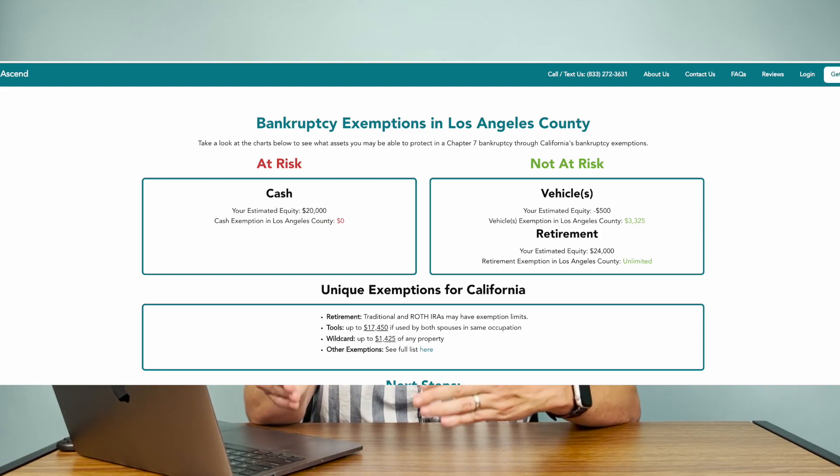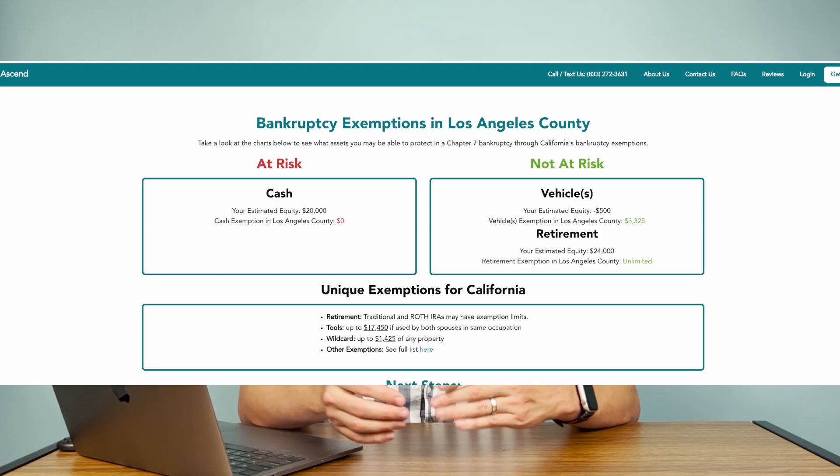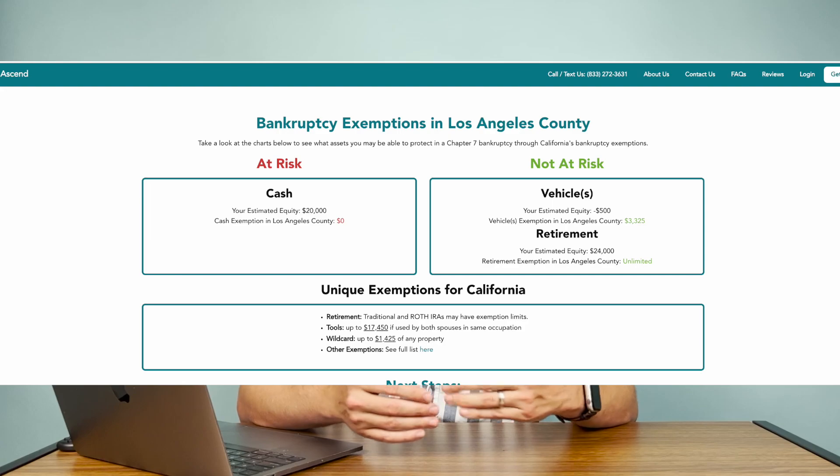We actually built a bankruptcy exemptions calculator that helps you estimate the amount of equity that you have in your home relative to your state's bankruptcy exemption allowable. This can give you a sense of if you have equity that is over the exemptions and the different chapters that you might consider based on exemptions. We include in the description below the bankruptcy exemptions calculator that can help you understand the equity in your home versus the allowable equity from the bankruptcy exemption guidelines.